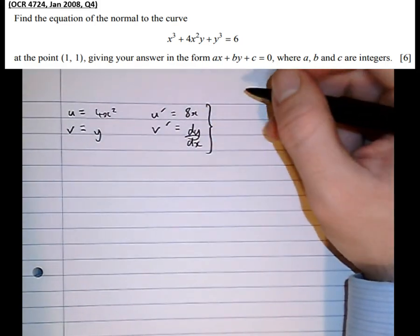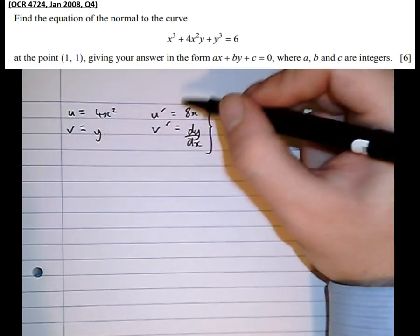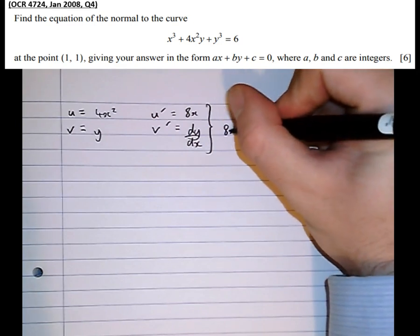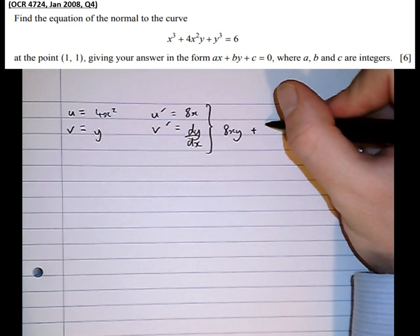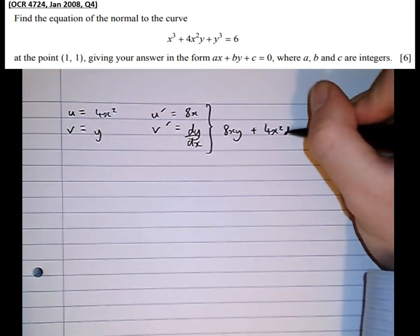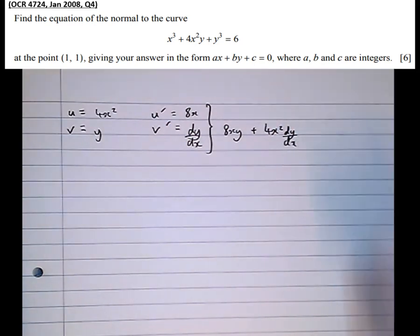Applying the product rule, we get the differential is v, u dash, so 8xy plus u, v dash plus 4x² dy/dx. So we've done the product first.